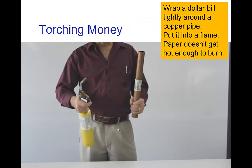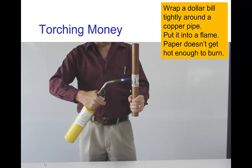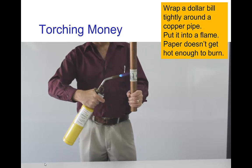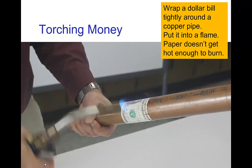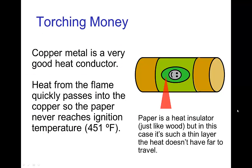Let's look at a little demonstration. I'm going to wrap a dollar bill tightly around a copper pipe and apply a blow torch. You see that the money was not burned because copper is a very good heat conductor. The energy which was being delivered by that high temperature flame very quickly passed out of the paper and into the copper.